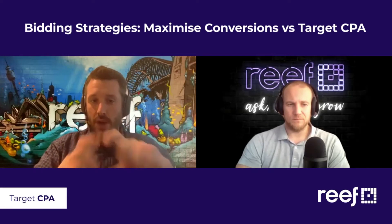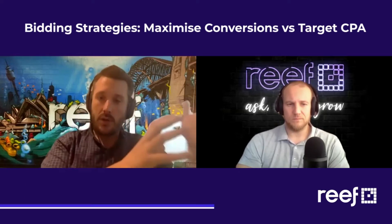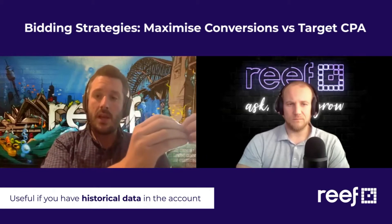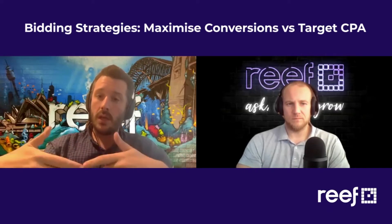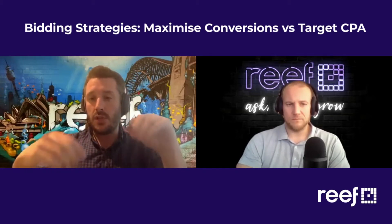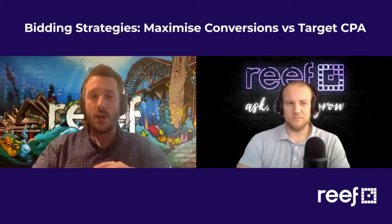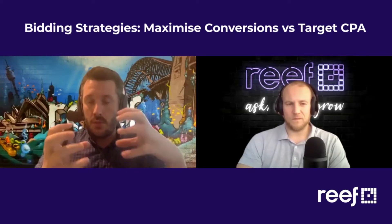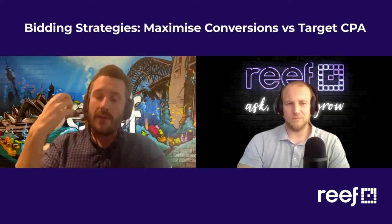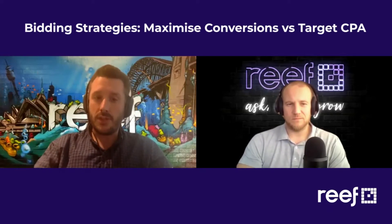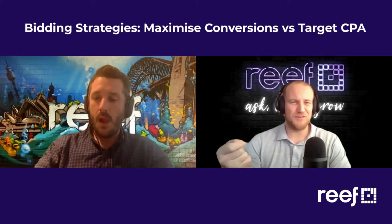Target CPA, on the other hand, is a great tool for optimizing the account toward a CPA target. It will need historical data in the account and it does need a minimum number of goals, which I'll go into later. But it's a great bidding strategy to use if you've got a CPA goal in mind — for example, a $60 CPA target. So when you're choosing which one to go with, you need to think: do I just want to get as many conversions as possible, or do I have a realistic CPA target in mind?